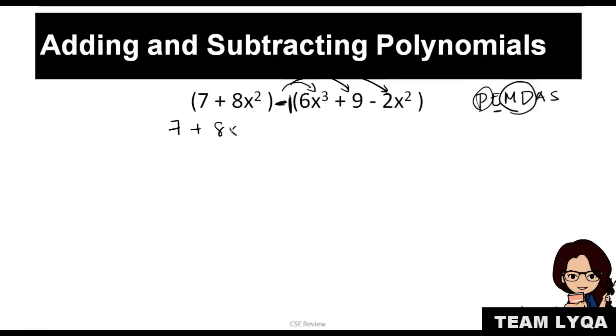So when there's a minus like that with a parenthesis, what will automatically happen is all the contents will change signs. What does that mean? This would still be 7 plus 8x squared, nothing changed there because they have different apelidos anyway. And then this would be minus 6x cubed, because this is positive it will change sign, it becomes minus 9, this is negative it becomes positive, plus 2x squared. And then that is how you start solving it.